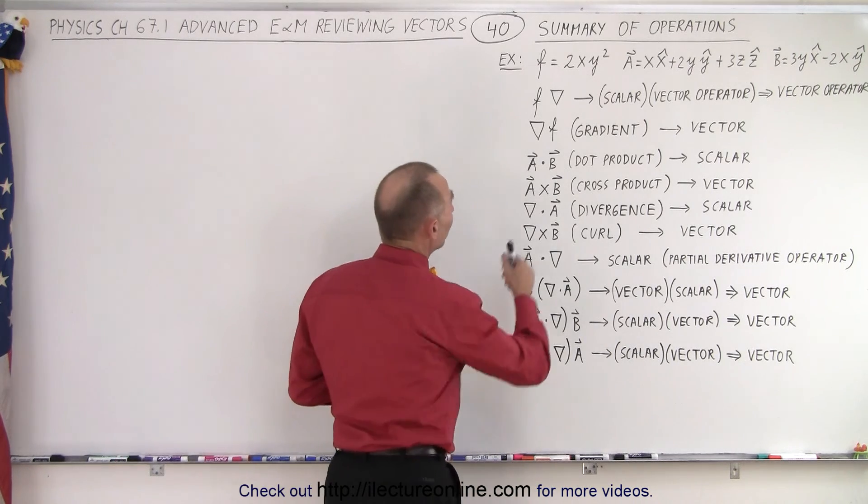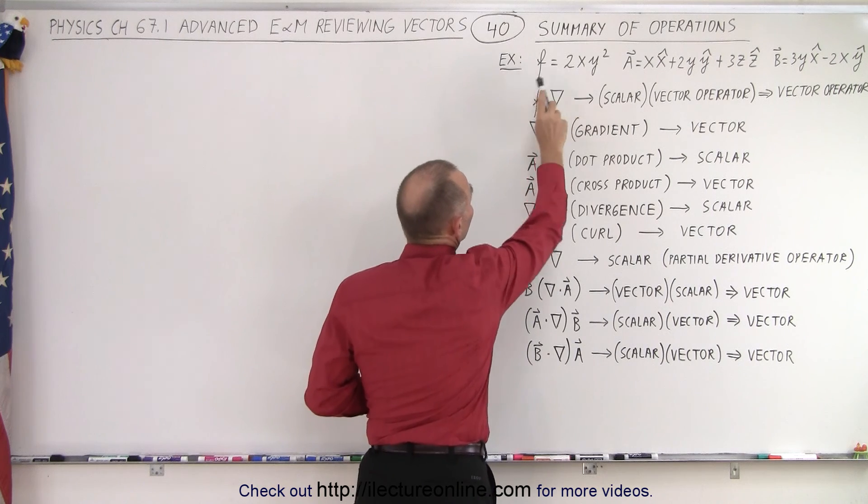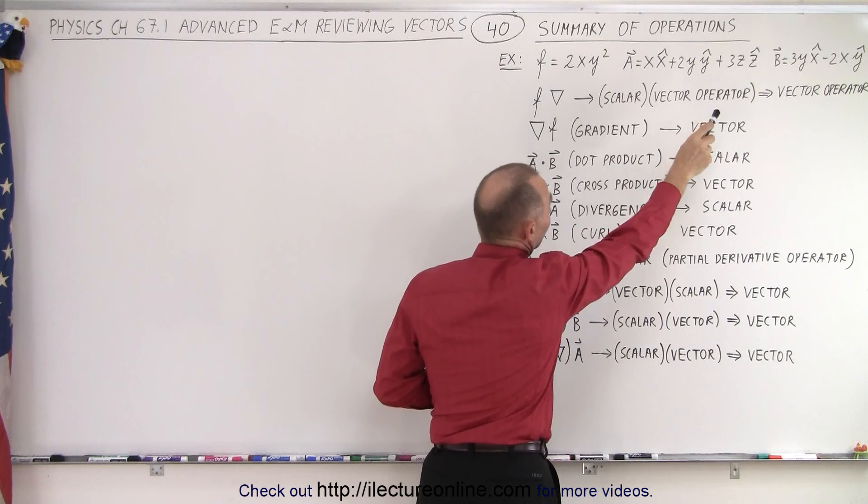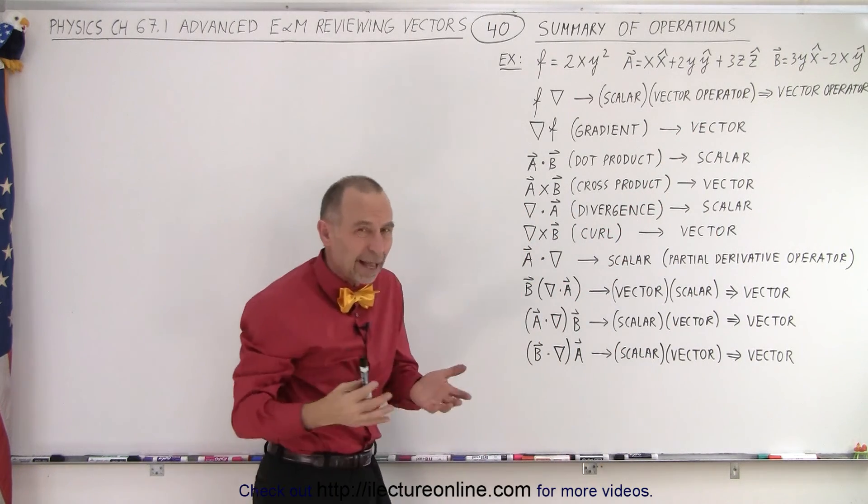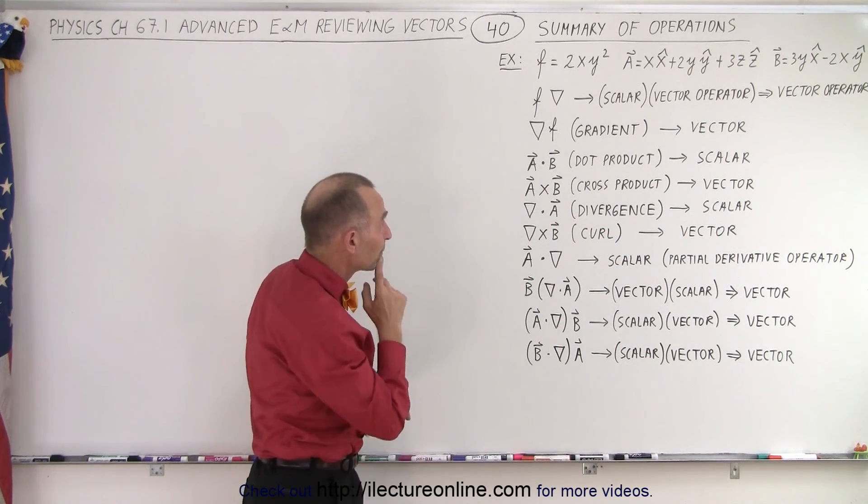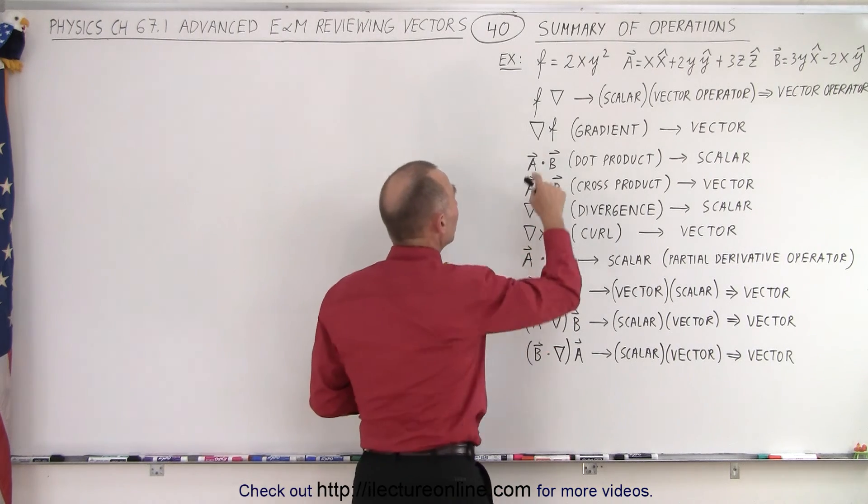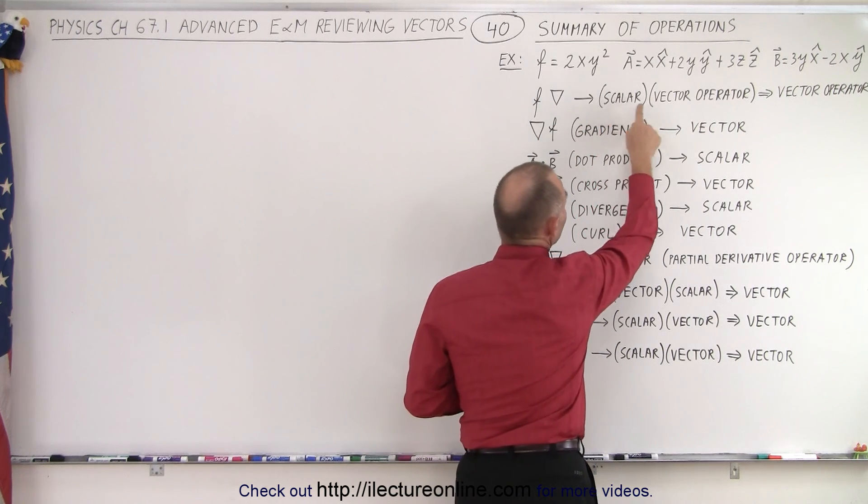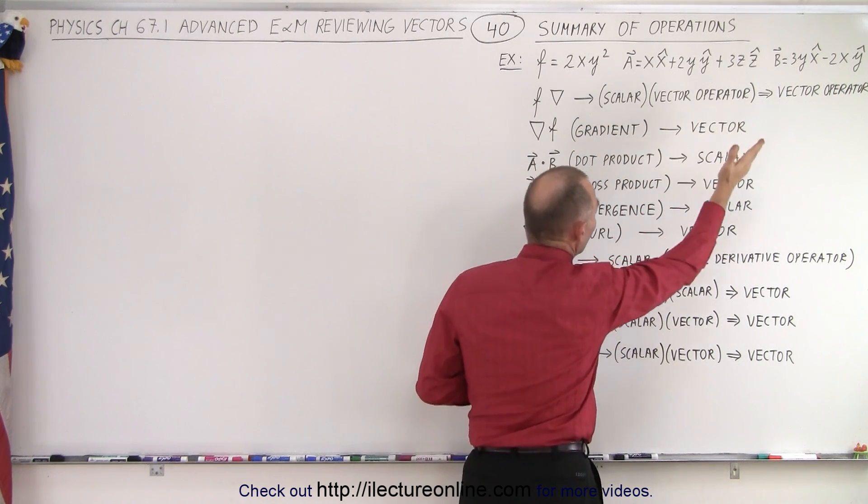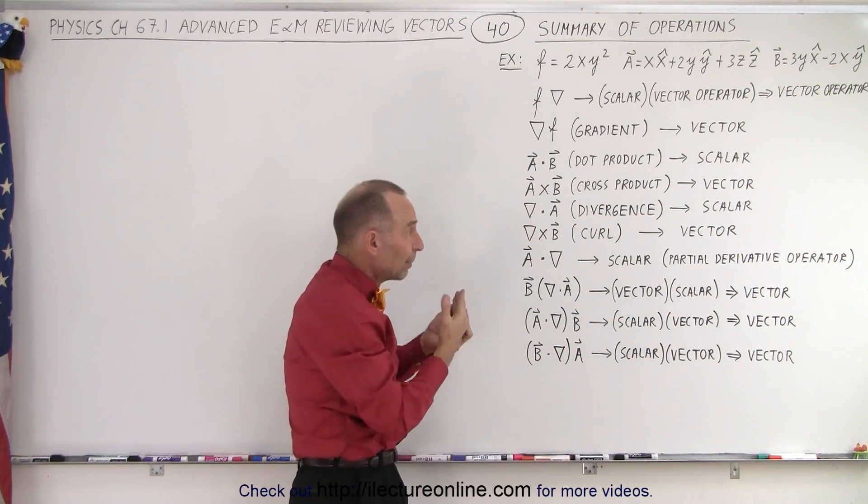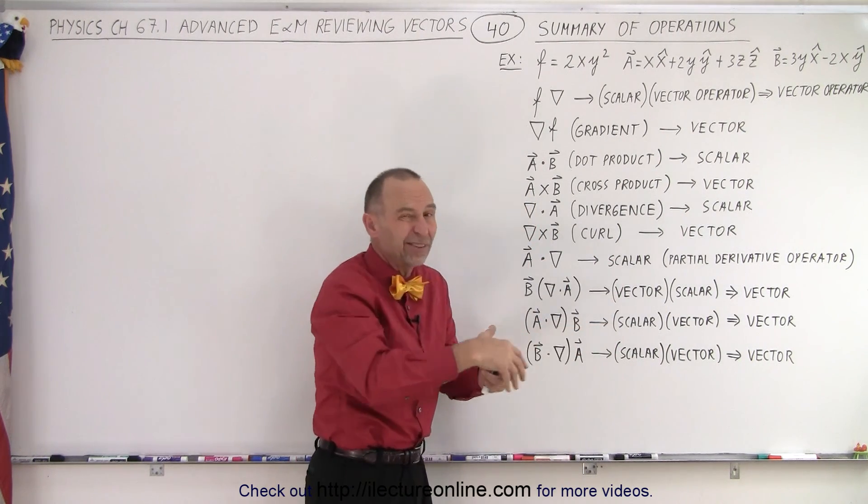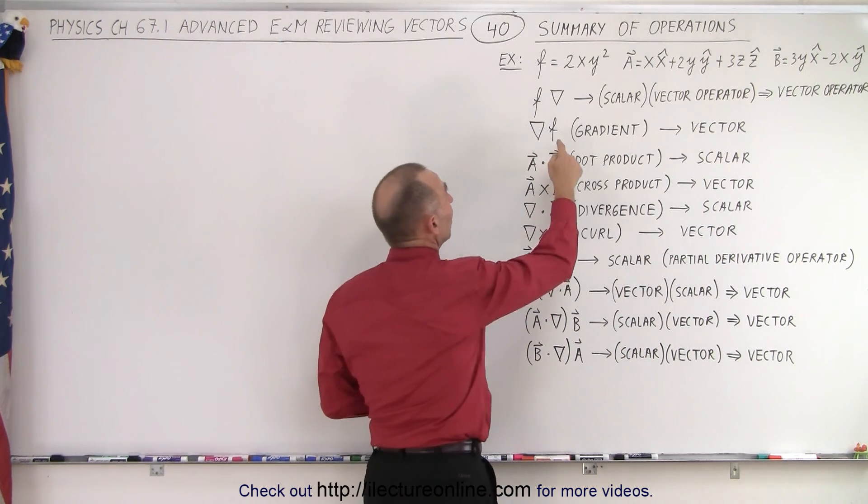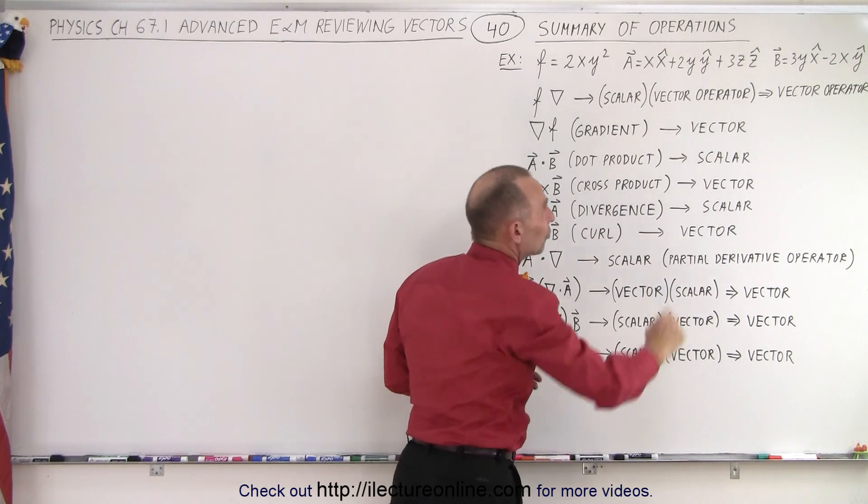So first we have a product. And by the way notice I have an example of a function, this is a function in x and y. Here we have a vector a, we have a vector b, just examples that we're going to use afterwards in the next video. But first we have a product between the function and the del operator. So the function is a scalar quantity and we're multiplying it times a vector operator and the result is that you still end up with a vector operator. We typically will then operate on something else, presumably a vector, it could be a scalar, but at least it's simply the product of a scalar and a vector operator which then typically gets used again.